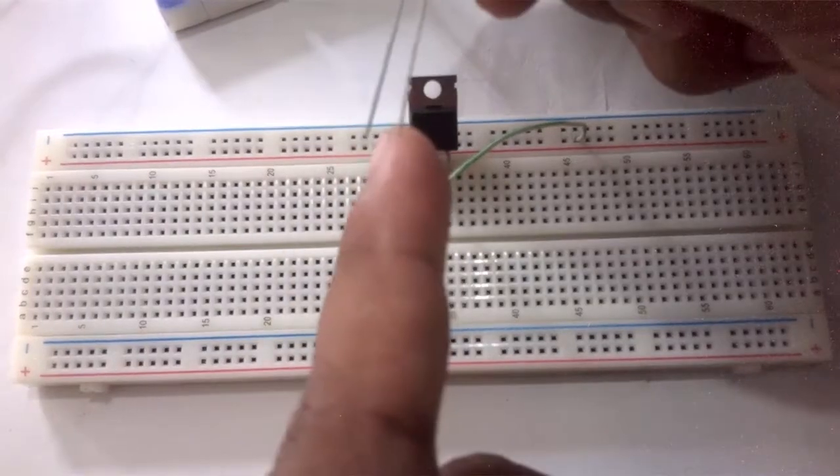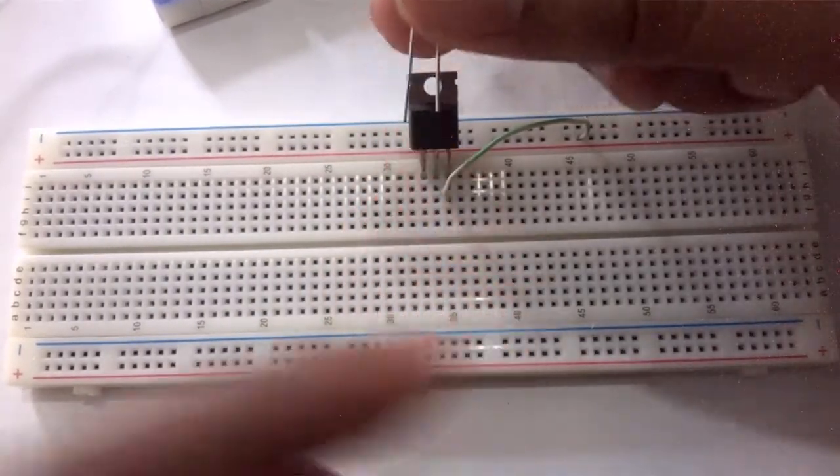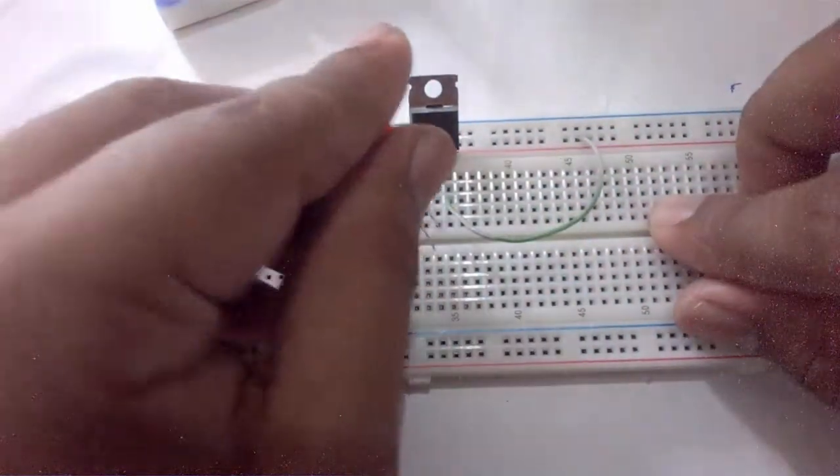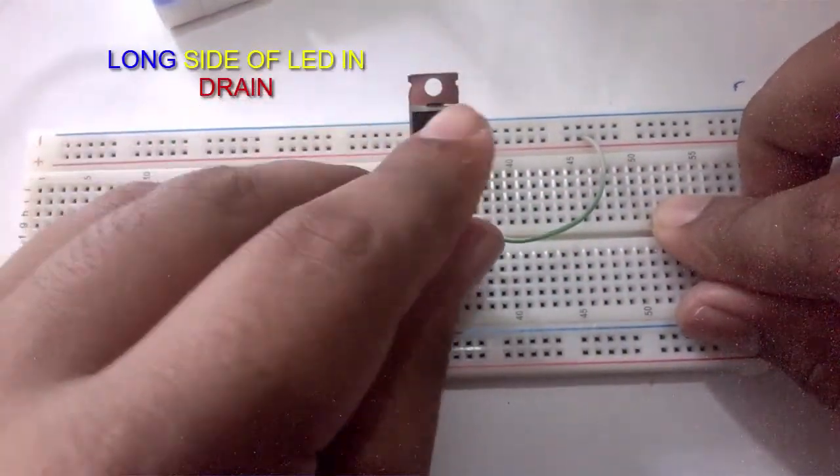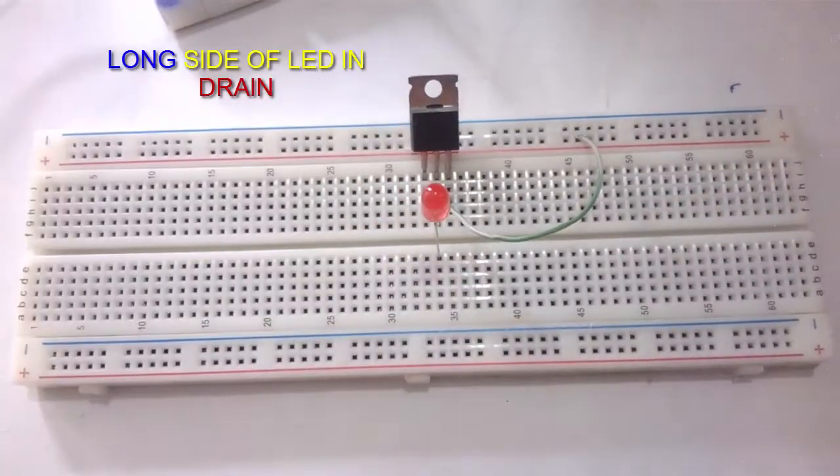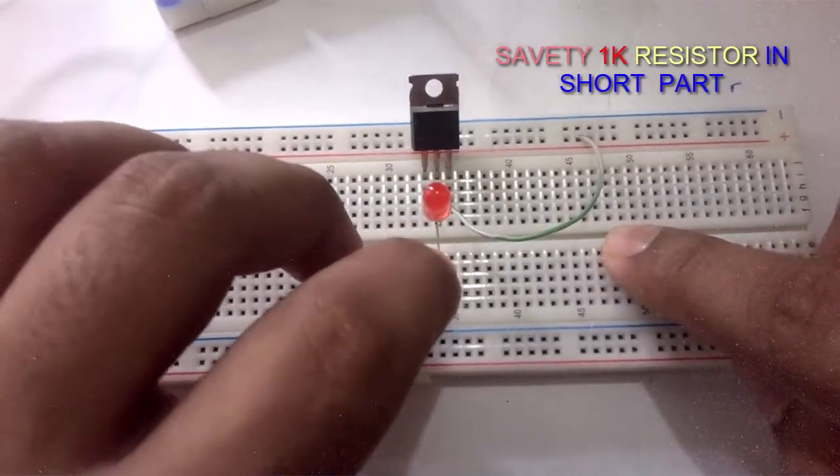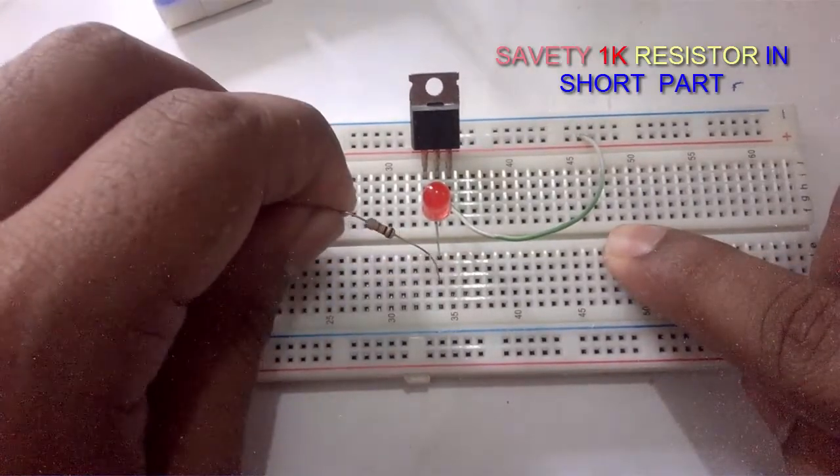As you know, long part of the LED is positive and short part is negative. So the long part of the LED is connecting in the drain of the MOSFET. A safety resistor is connected in the LED.